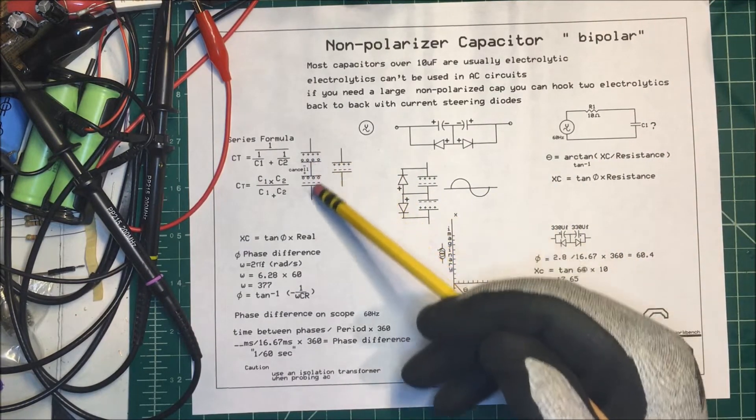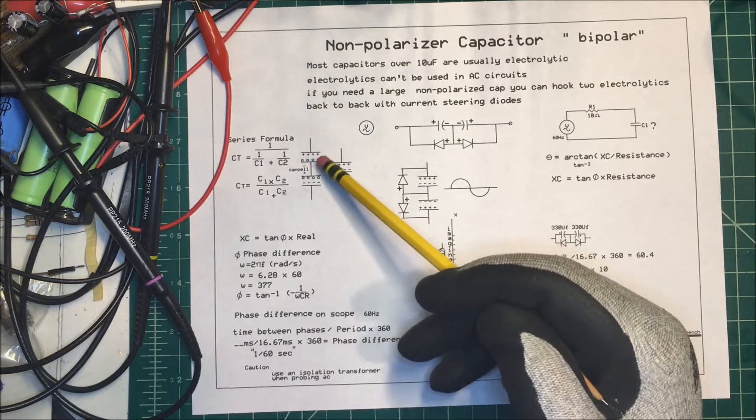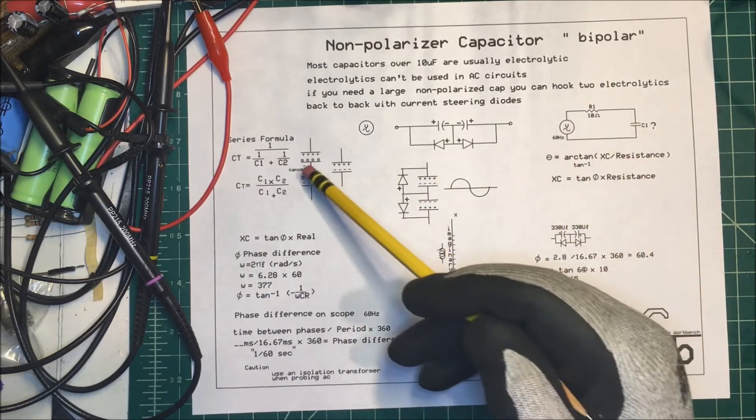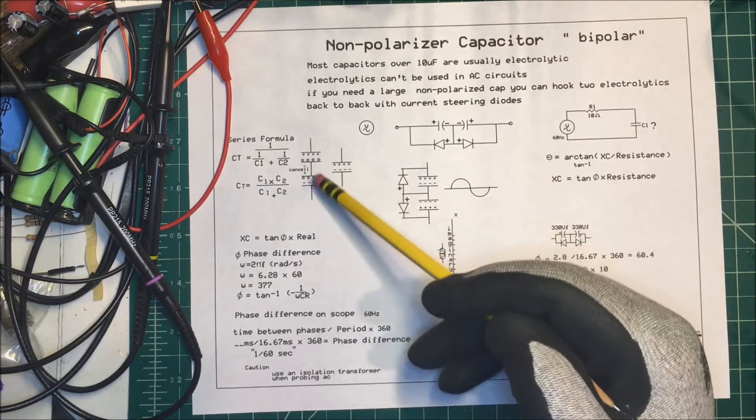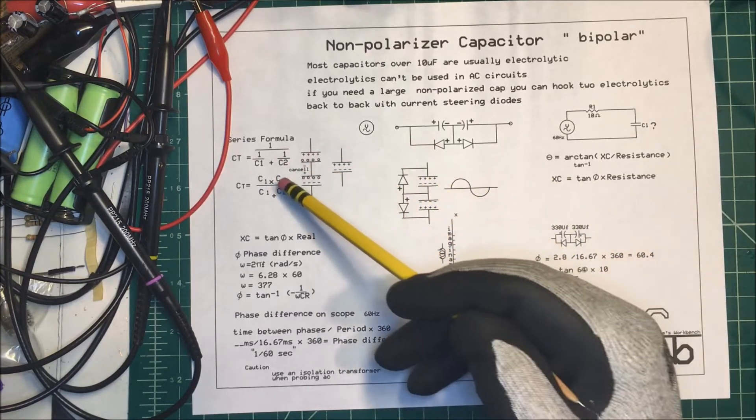If we put two capacitors in series, positive, negative, positive, negative, the capacitance is going to be reduced by these formulas here. If they were the same capacitance, it's going to bring it down in half.